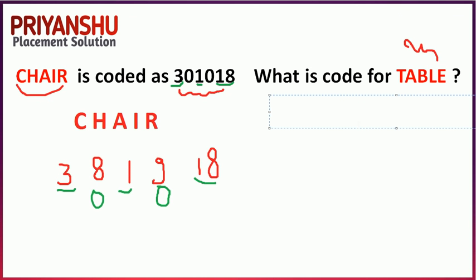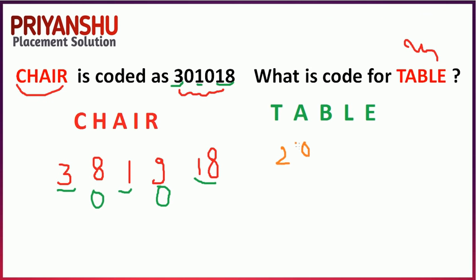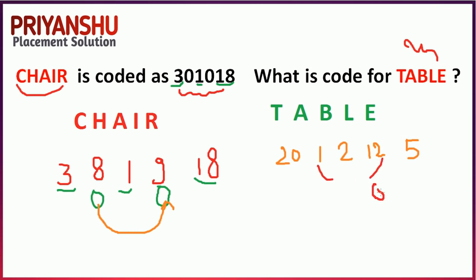Now let's check for TABLE: T-A-B-L-E. T is the 20th letter, so value is 20. A is 1, B is 2, L is 12, E is 5. We place zeros at alternate positions, giving us: 20-0-1-0-2-0-5. So the answer is 2-0-0-2-0-5.